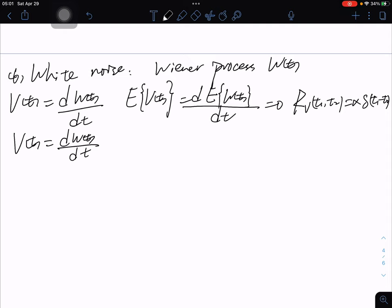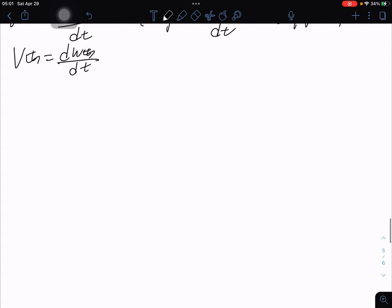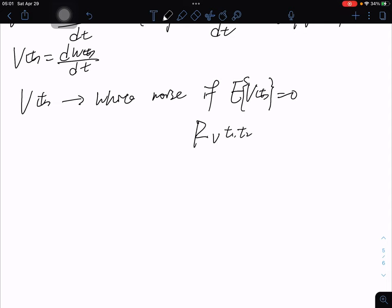We wish to define more general white noise with zero mean and impulse autocorrelation function. So if V(t) to be white noise, if E[V(t)] = 0 and R_V(t1, t2) = Q(t1)δ(t1-t2), right?